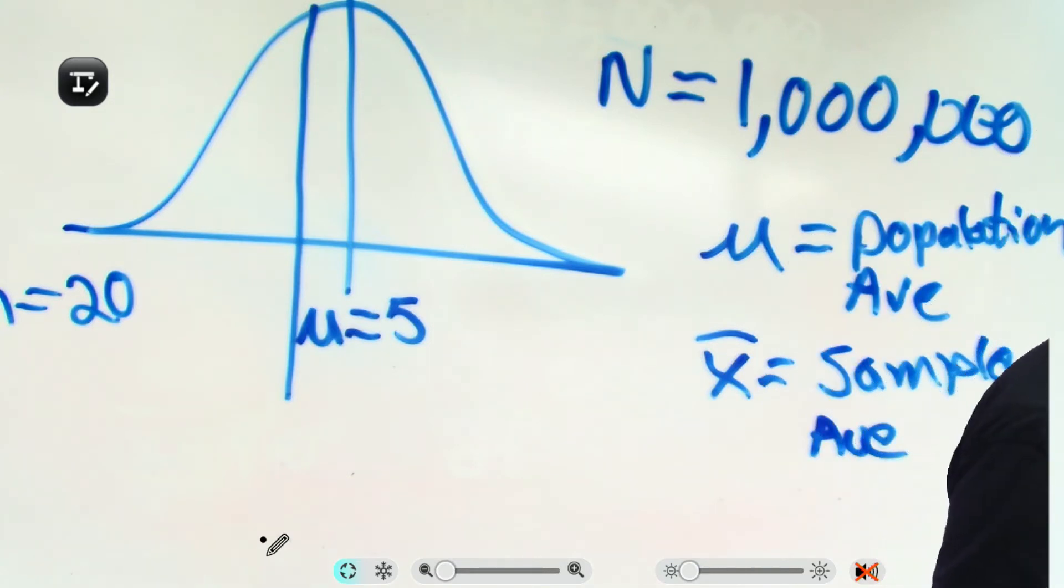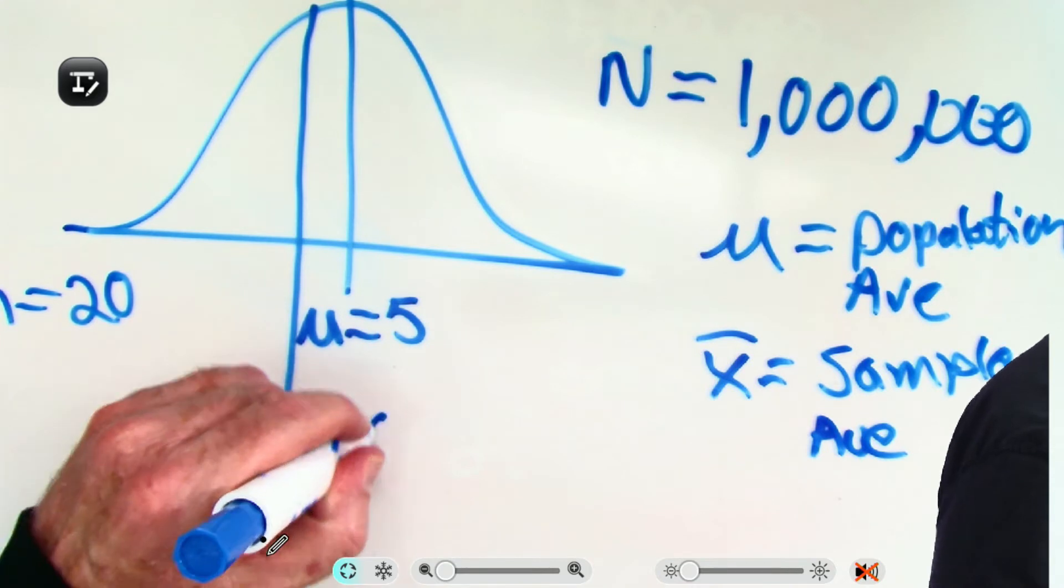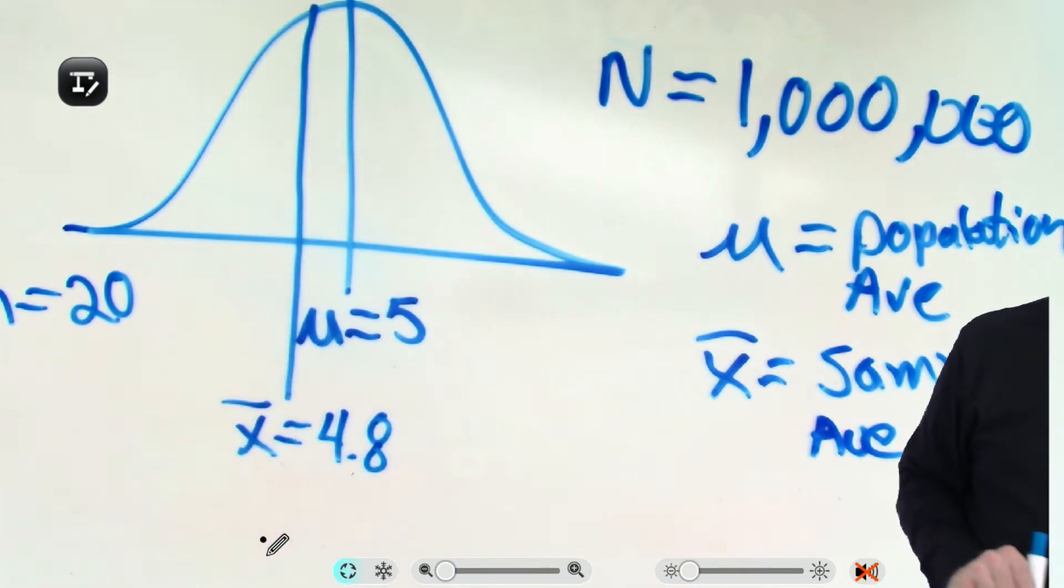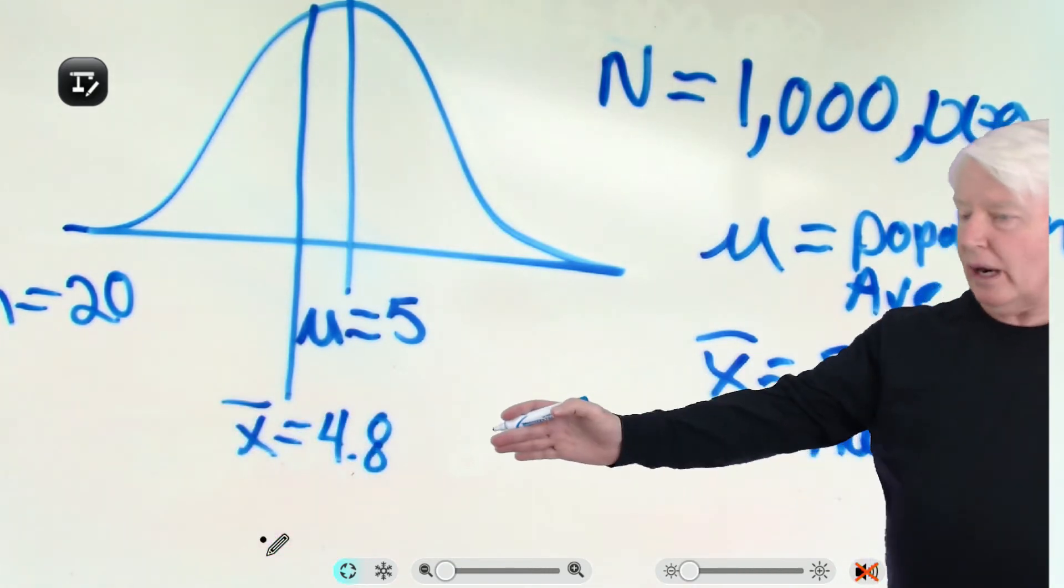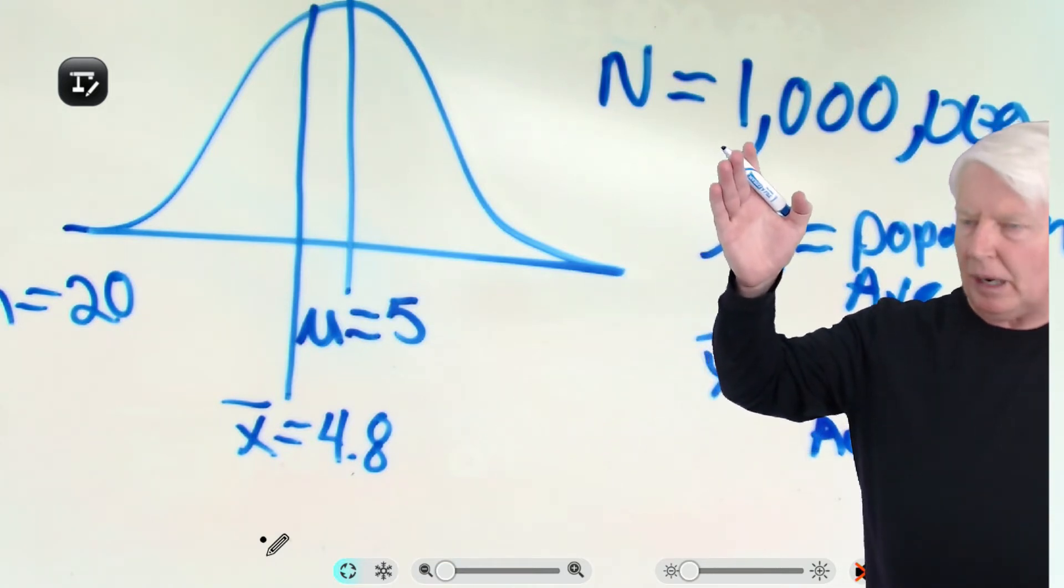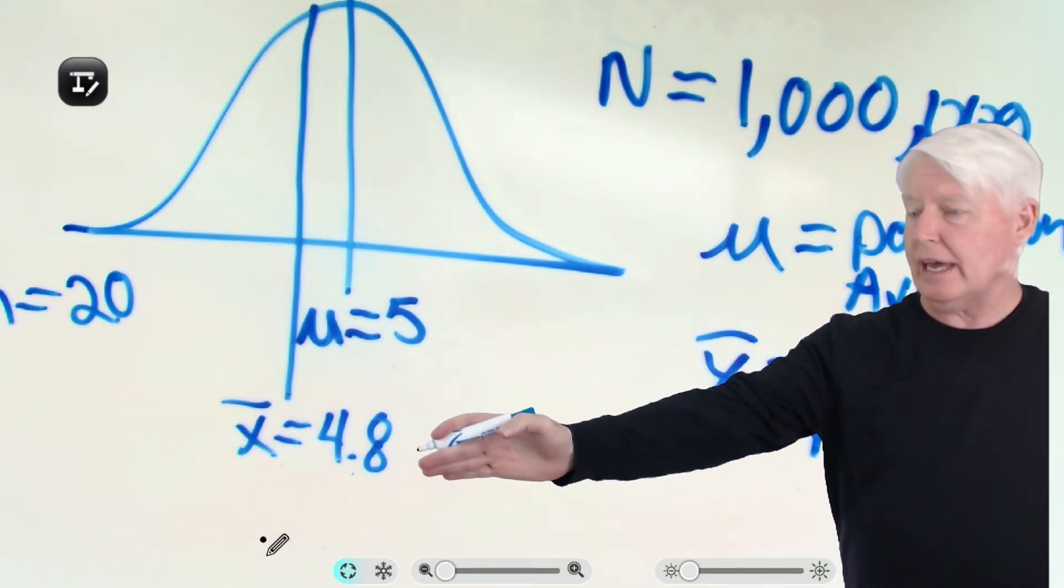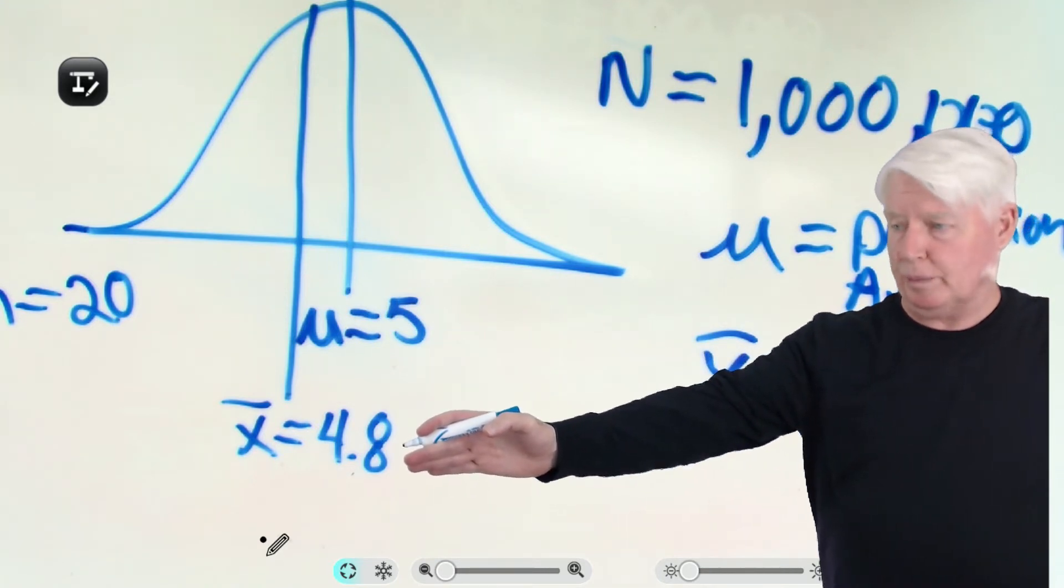Now you go ahead and use that and you calculate the average of your sample. That's why we call it X bar. X bar, and let's say, it is 4.8. So we tried to estimate, with a sample size of 20, we tried to estimate the population average. Now in reality it's 5, but you say, from your analysis, it's 4.8.